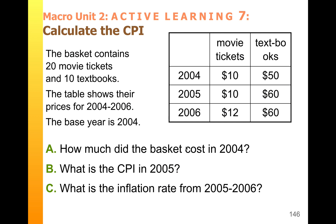For your active learning number seven, you are now going to calculate various things related to CPIs. In question A, you'll calculate the market basket cost for 2004. In B, you'll calculate the CPI for 2005. And in C, you'll calculate the inflation rate from 2005 to 2006.